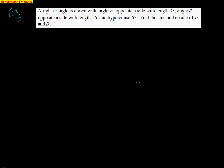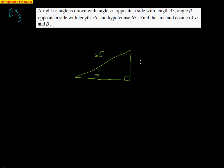Here's another example where we need to draw the picture from a description. A right triangle is drawn with angle alpha opposite a side of length 33, beta opposite a side of length 56, and hypotenuse of 65. I'm just going to draw a right triangle — it doesn't have to be perfect. The hypotenuse is 65, clearly across from the right angle. Alpha is opposite the side of length 33, and beta is opposite the side of length 56. To verify it's a right triangle: 56 squared plus 33 squared equals 65 squared — and that is true.